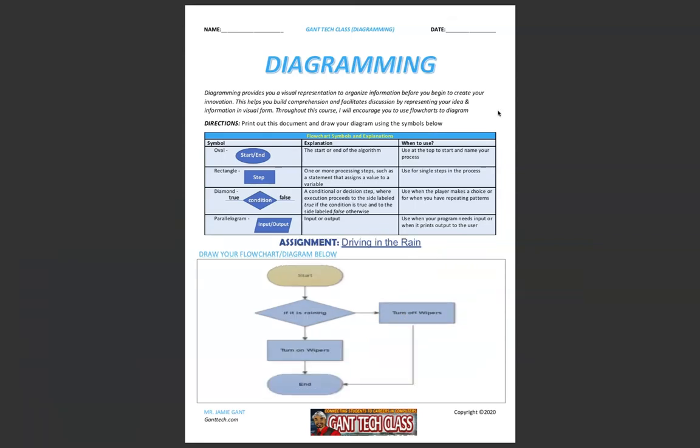Here's one more example showing you a condition. For example, driving in the rain. We have our start, so we use an oval, start or end. Here's our condition. If it is raining, if it's raining and we're driving, we're going to turn on our wipers, and then we can end the program. But if it is not raining, we can turn our wipers off, and then we stop. So here was the condition with true or false, and here is our different steps.